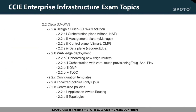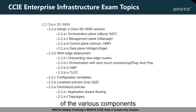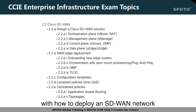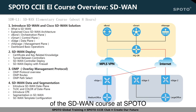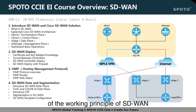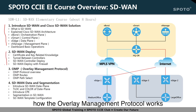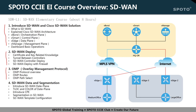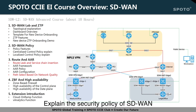SD-WAN is another module that occupies about 25% of the SDN exam topics. We need to understand the role of the various components of SD-WAN and how they work, and be familiar with how to deploy an SD-WAN network and configure policy. In the SD-WAN elementary course, we will spend about 8 hours teaching the introduction and working principle of SD-WAN, how to deploy an SD-WAN network, and how the overlay management protocol works. Then we will spend about 10 hours in the SD-WAN advanced course teaching how to quickly deploy SD-WAN at large scale and the security policy of SD-WAN.